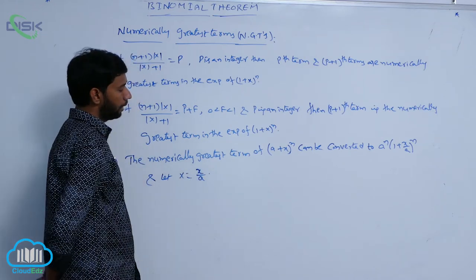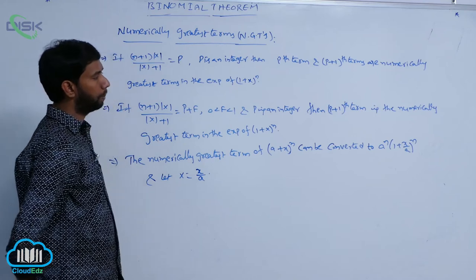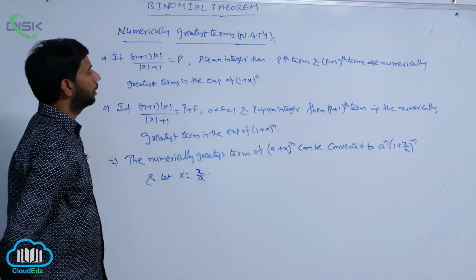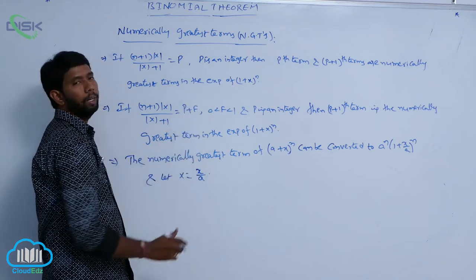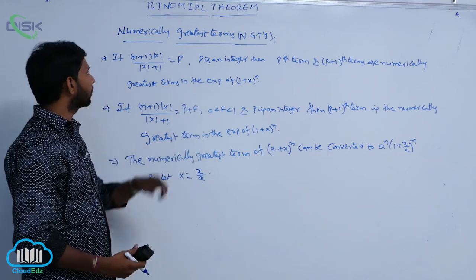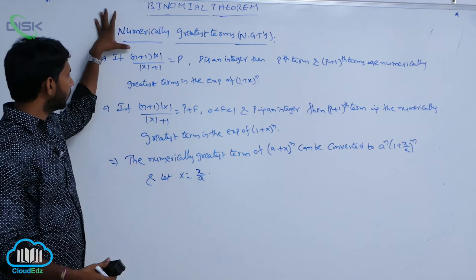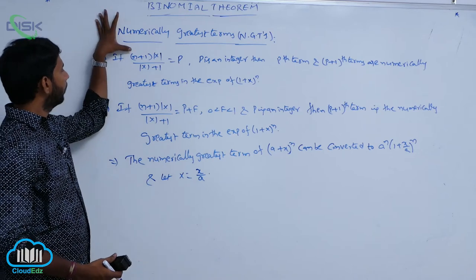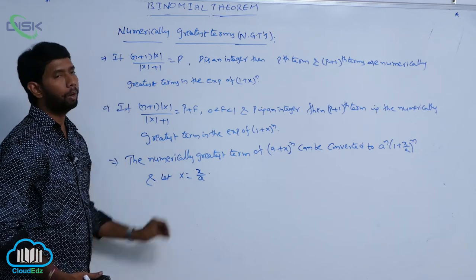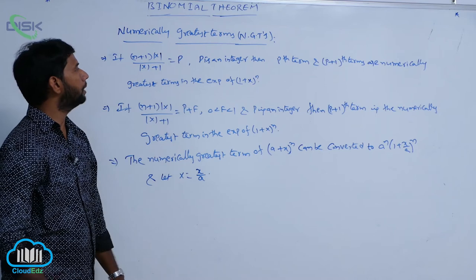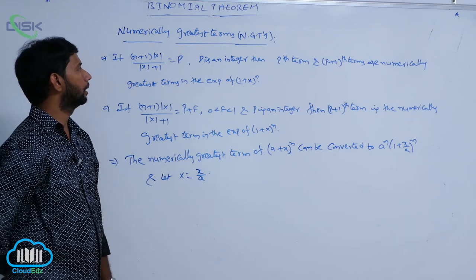Let the variable equal X/A and then find the numerically greatest term. The first case is if (N+1) × |X| / (|X| + 1) equals P, where P is an integer.